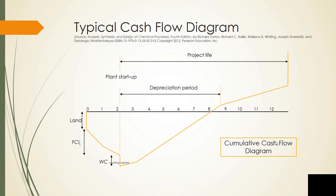In our last lesson, we looked at a typical cash flow diagram where we begin by purchasing land, building the thing, and we go all the way through to the end of the life of the project where we're going to salvage our equipment, sell back our land, and recover our working capital that we had deposited at the beginning of the time.